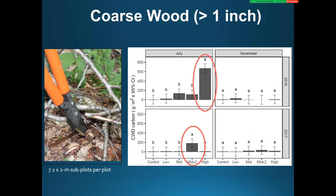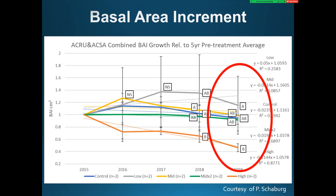For coarse woody debris, we collected all wood greater than one inch in two-by-two meter subplots in July and November following the treatments. In this upper left graph, you can see the first-year July increase in coarse woody debris with treatment, with a big pulse in the high ice treatments. In the lower left, you can see the added input of coarse woody debris following the second-year mid-times-two treatment. The graph on the right shows that most of the wood came down immediately after the treatments, with really no significant increase in inputs later in the year. For basal area increment, we analyzed tree cores. Results showed a significant decline in basal area increment in the high ice treatment, particularly compared to the low ice treatment, and a significant decline in basal area increment in the high ice treatment over time.